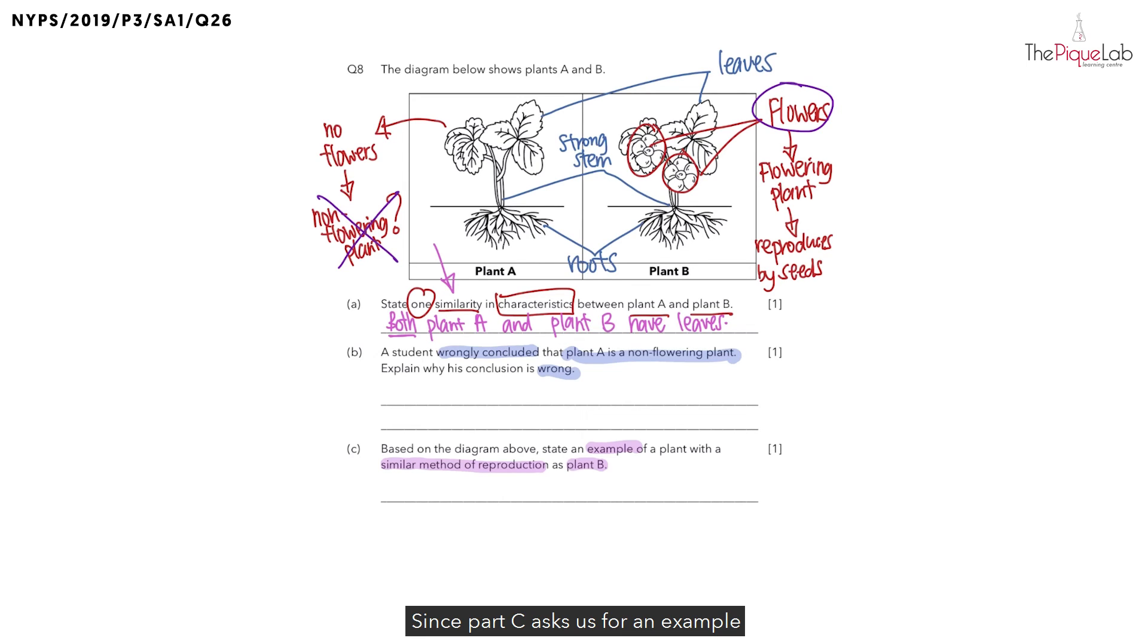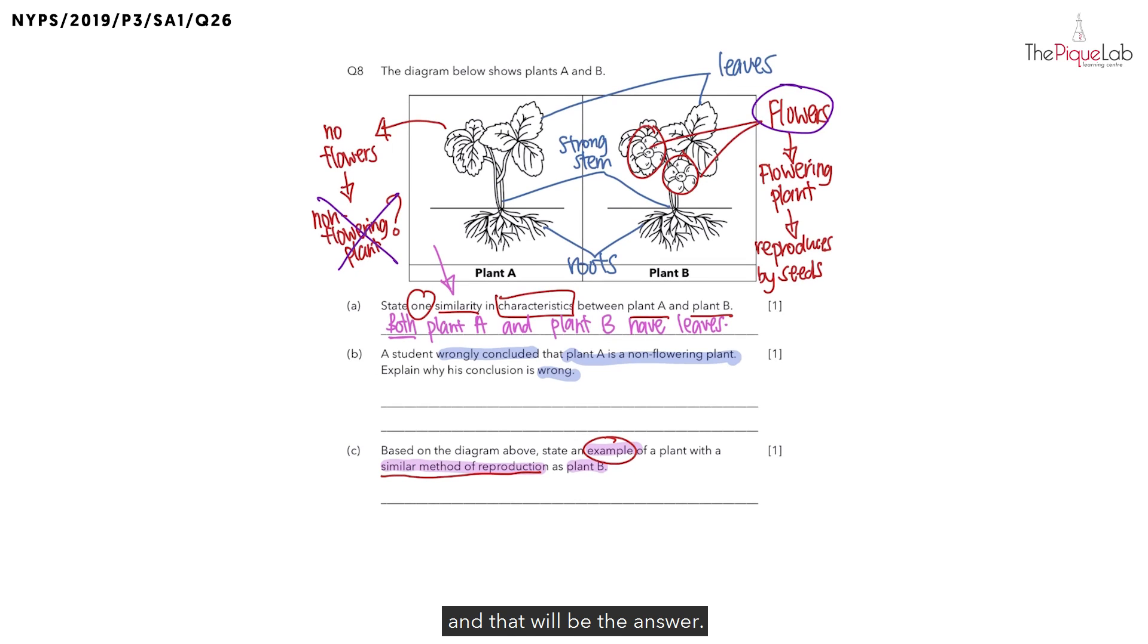Since part C asks us for an example of a plant with a similar method of reproduction, this question is trying to ask you whether you know any other plants that reproduce by seeds. And they are essentially our flowering plants. So you can just write in any flowering plants that you can think of and that would be the answer. And one example would be the rose plant.